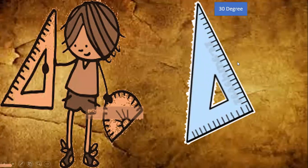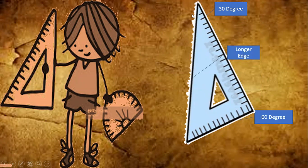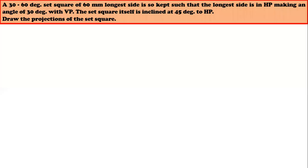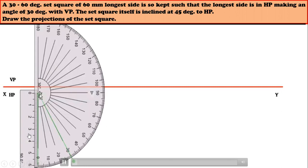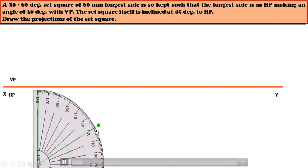This is a set square where one angle is 30 degrees and the other angle is 60 degrees. The longer edge will be resting on HP — that means this longer edge will be at the extreme left position and the first position will be below the XY line. First, measure 60 mm at the extreme left position, then use a protractor to draw an angle of 30 degrees and on the other side draw an inclination line of 60 degrees.